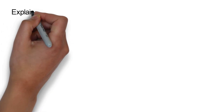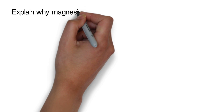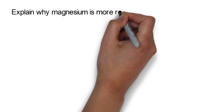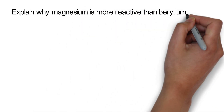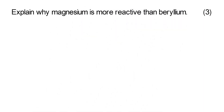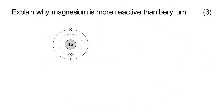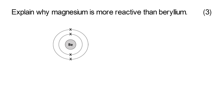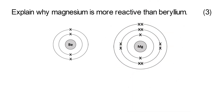Now we'll have a look at group 2 elements. Explain why magnesium is more reactive than beryllium. So magnesium and beryllium are both in group 2, so they've both got two electrons in their outer shell. Have a go at pausing the video and see if you can figure out why magnesium would be more reactive.